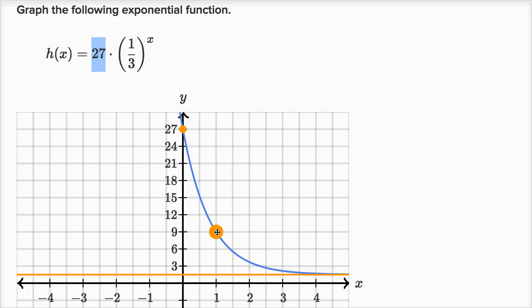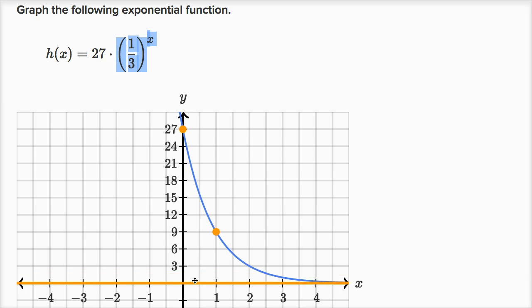Now let's think about the asymptote. What's going to happen when x becomes really big? If I take one third to a really large exponent, say to the tenth power, or to the hundredth power, or to the thousandth power, this is going to start approaching zero as x becomes much larger. Something that is approaching zero times 27 is going to approach zero as well. So we have a horizontal asymptote at zero.